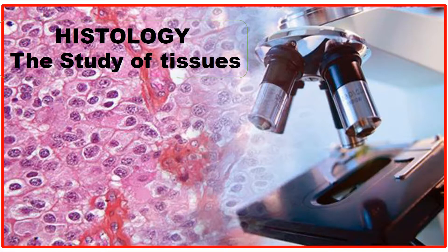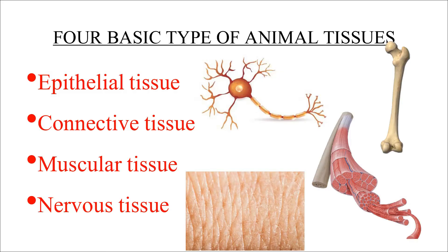There are four basic types of animal tissues: epithelial tissue, connective tissue, muscular tissue, and nervous tissue.